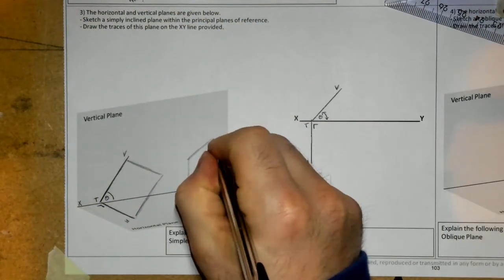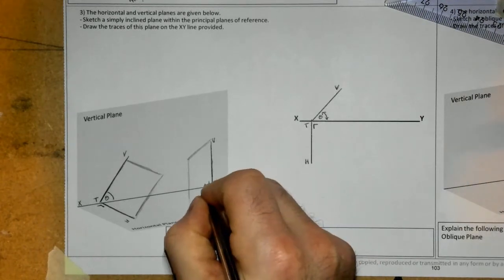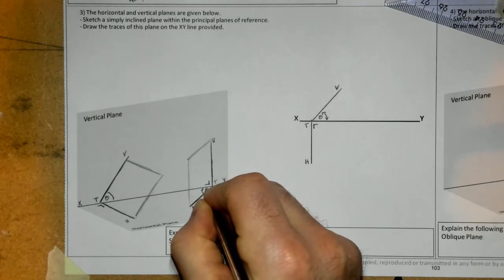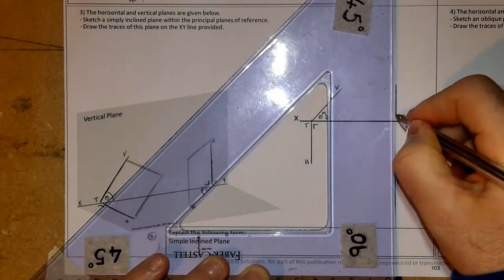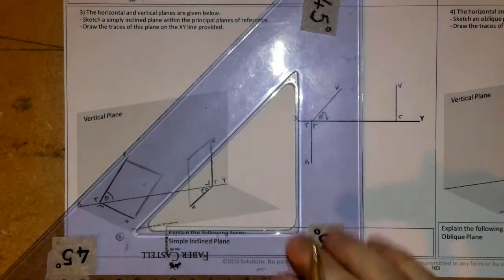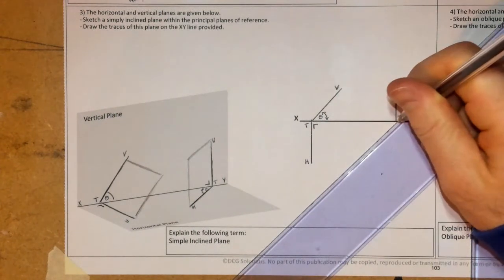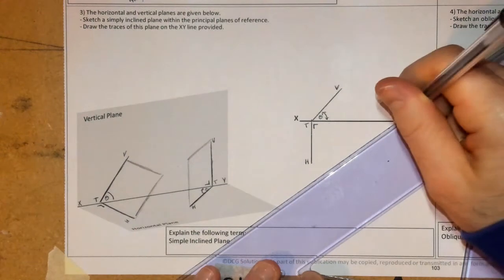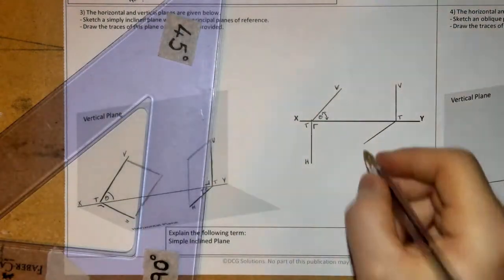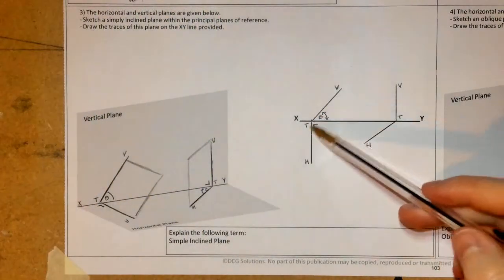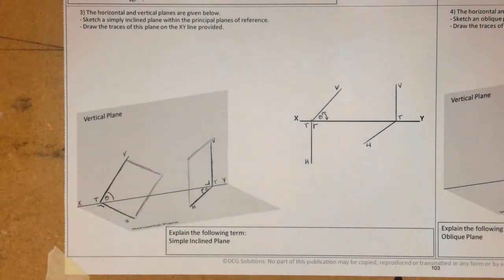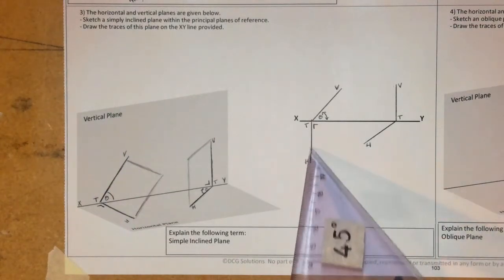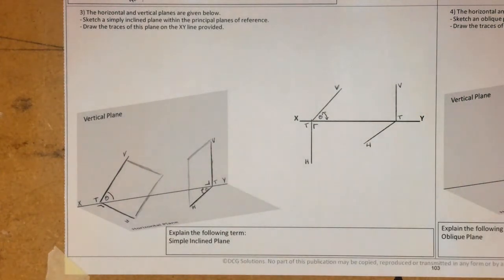We have the vertical trace VT and the horizontal trace at 90 degrees. In the orthographic view, VT is perpendicular and HT is at an angle. So those are simply inclined planes — they're always perpendicular to one of the planes of reference, either the vertical or the horizontal plane.